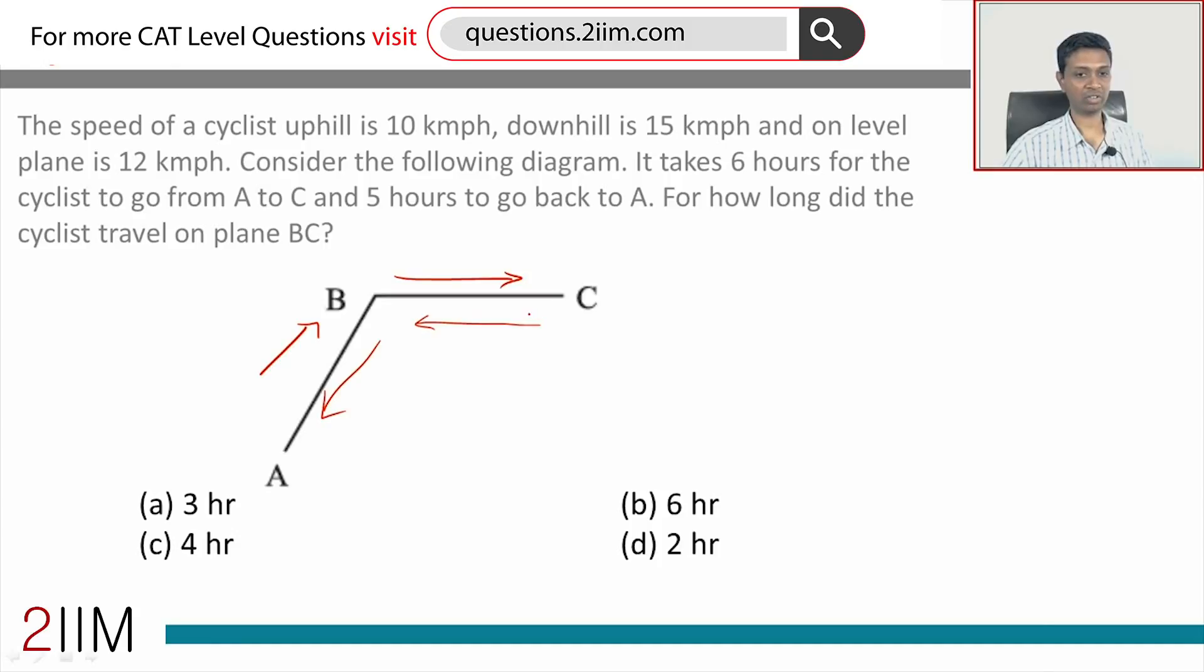Uphill speed is 10 kilometers per hour, downhill speed is 15 kilometers per hour. This is the same in both directions, 12 kilometers per hour.